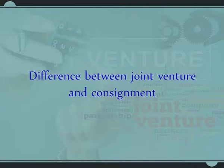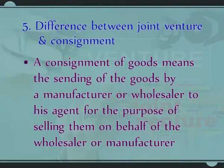Next, the difference between joint venture and consignment. A consignment means the sending of goods by a manufacturer or wholesaler to his agent for the purpose of selling them on behalf of the wholesaler or manufacturer. The person who sends the goods is known as the consigner, while the person to whom the goods are sent is the consignee. The goods are sold by the consignee on behalf of the consigner, and the consignee gets a commission for that. In joint venture, two or more persons come together to carry on a business activity to fulfill a particular purpose. After the purpose is fulfilled, the joint venture comes to an end, and profits or losses are shared by the co-venturers.